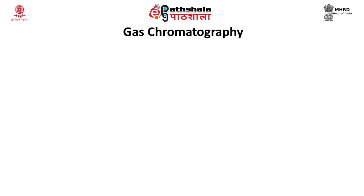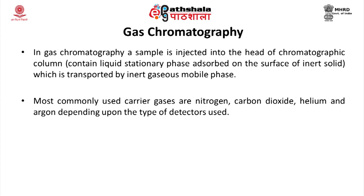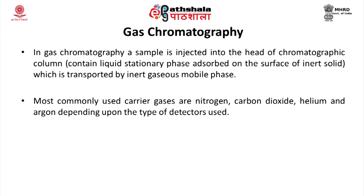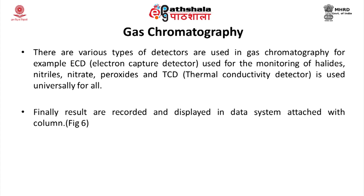In gas chromatography, the sample is injected into the head of a chromatography column containing a liquid stationary phase adsorbed on the surface of an inert solid, transported by an inert gaseous mobile phase. Commonly used carrier gases are nitrogen, carbon dioxide, helium, and argon, depending on the type of detector used. The column temperature must be controlled and maintained depending on the boiling point of the sample. Various detectors are used: ECD (electron capture detector) for monitoring phospholipids, nitrides, and peroxides; and TCD (thermal conductivity detector) used universally for all gases. Results are recorded and displayed in the data system attached to the column.